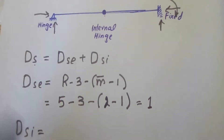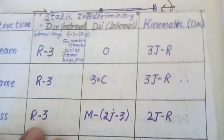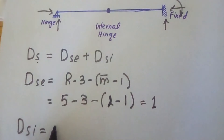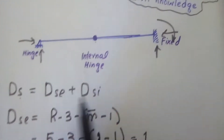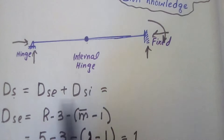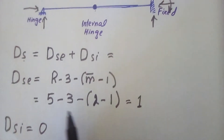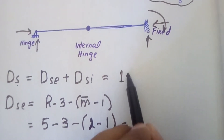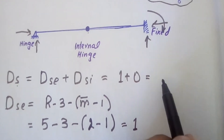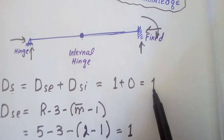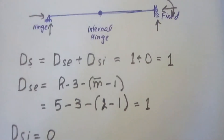As I told you, the internal indeterminacy for any beam is equal to zero, so we simply put it as zero. Putting together external and internal indeterminacy: external is one and internal is zero, so the total static indeterminacy for this beam is equal to one.